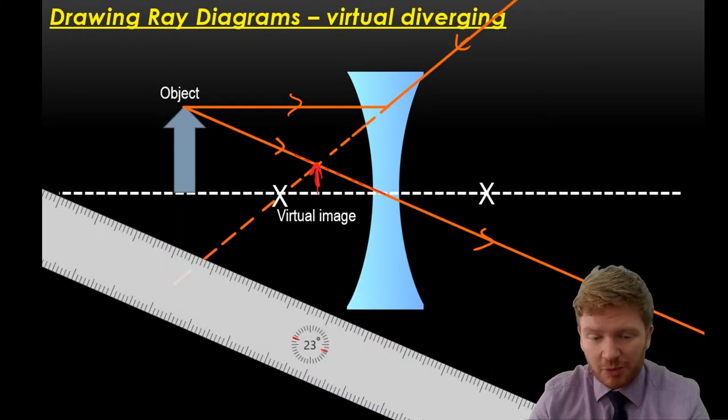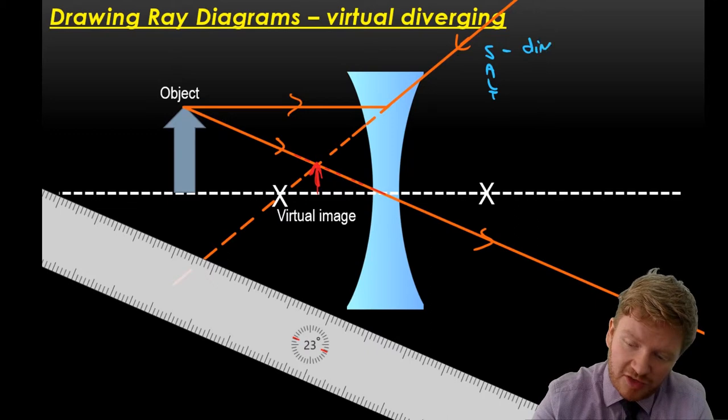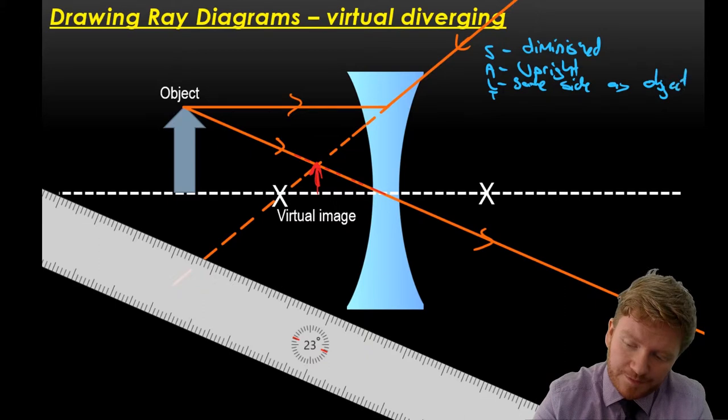So again, if I was to sort it this time, the size is diminished because it's smaller than it was. It is upright though. It is on the same side of the lens as the object. And it is a virtual image.